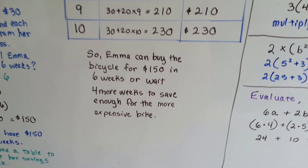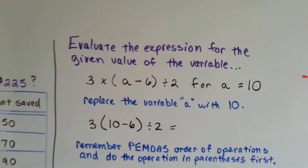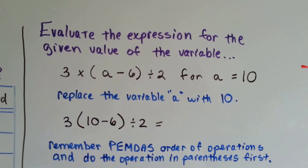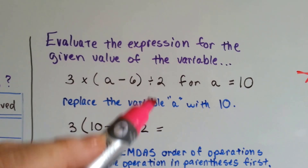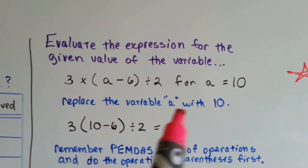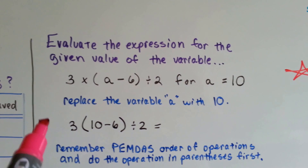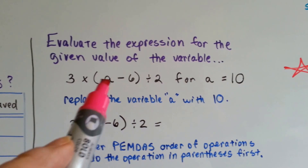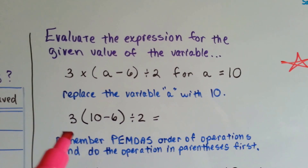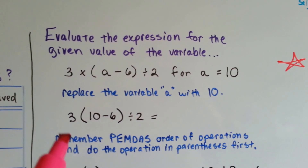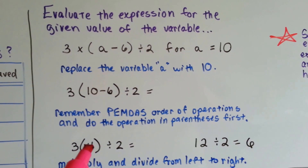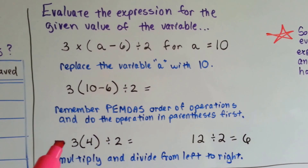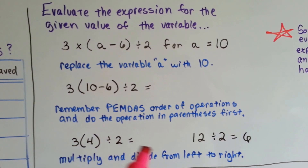Maybe the more expensive bike has better features. To evaluate an expression for a given value of the variable: if we have 3 times (a minus 6) divided by 2 and a equals 10, we replace the variable a with 10 first. So it becomes 3 times (10 minus 6) divided by 2. Then we remember PEMDAS — the order of operations — and do the operations in parentheses first: 10 minus 6 is 4. Then we multiply and divide from left to right: 3 times 4 is 12, divided by 2, which is 6.